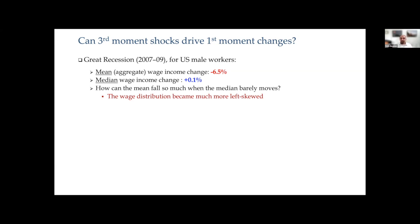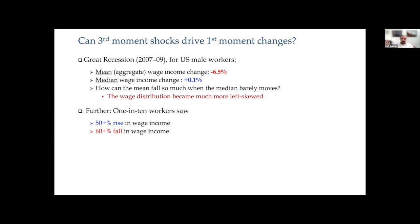The answer is because the wage distribution became much more left-skewed. A change in the shape of the distribution translates into a measured fall in the first moment. During those same two years, about 10% of workers had a 50% or more increase in their wage income, and about 10% had a 60% or larger fall. When the variance is so big, a 6–7% change in the mean can come entirely from what happens to the tails of the distribution.